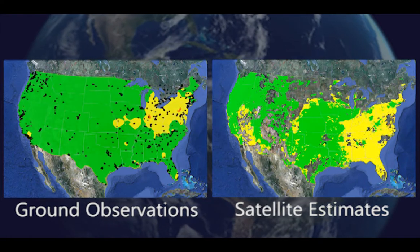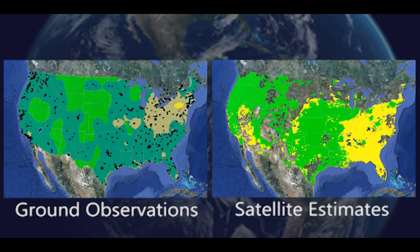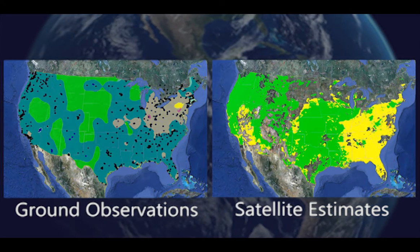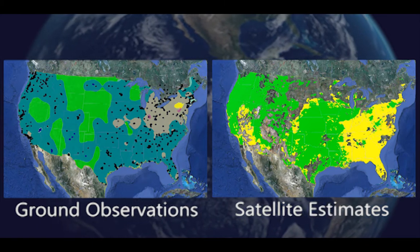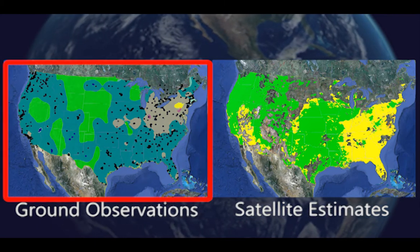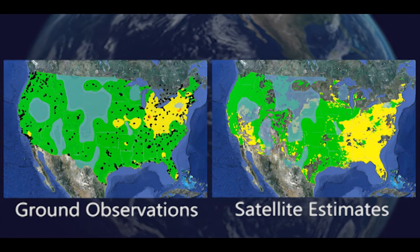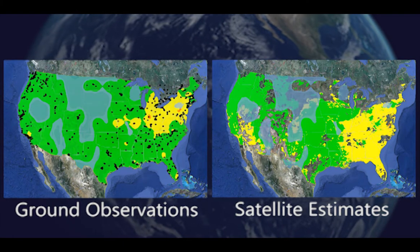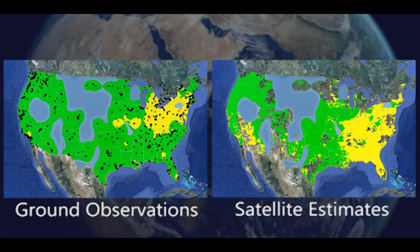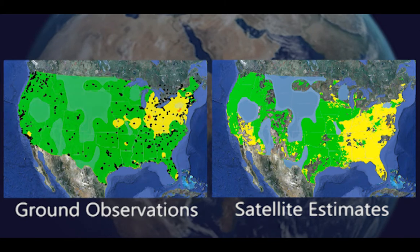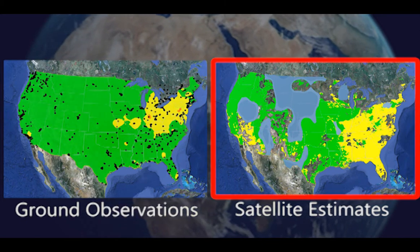In regions near monitors, ground observations have less uncertainty than the satellite estimates. Therefore, the ground observations are weighted more heavily. In regions far from the monitors, however, the satellite may provide better information, so its contribution to the fused product is weighted more heavily.